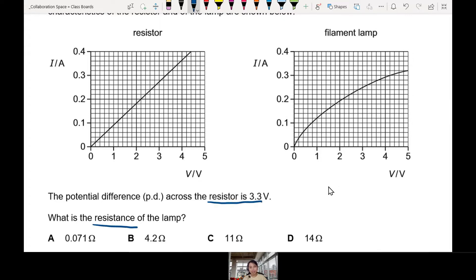If I don't know where to start, I'll just draw a circuit. So we have power supply, and in series you have resistor and you have filament lamp.